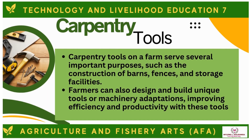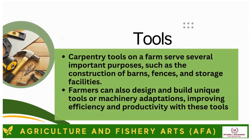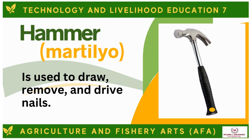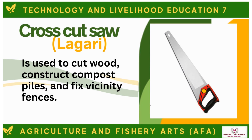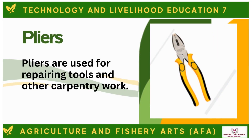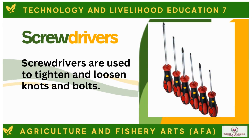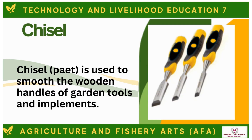Carpentry tools on a farm serve important purposes such as the construction of barns, fences, and storage facilities. Farmers can also design and build unique tools or machinery adaptations, improving efficiency and productivity. The Hammer is used to draw, remove, and drive nails. The Crosscut Saw is used to cut wood, construct compost piles, and fix vicinity fences. Pliers are used for repairing tools and other carpentry work. Screwdrivers are used to tighten and loosen knots and bolts. The Chisel is used to smooth the wooden handles of garden tools and implements.